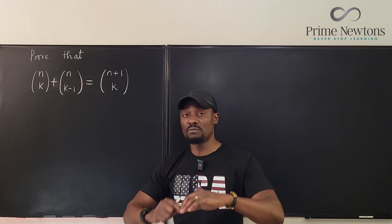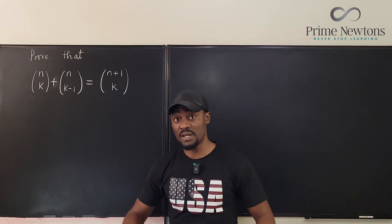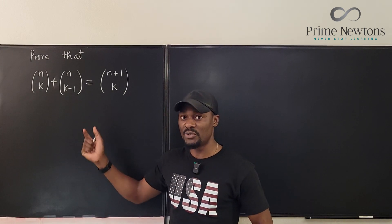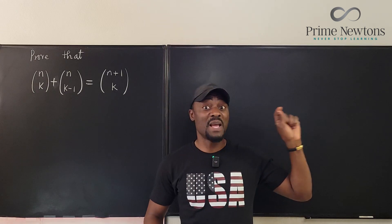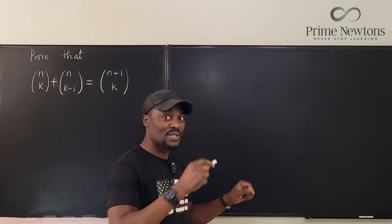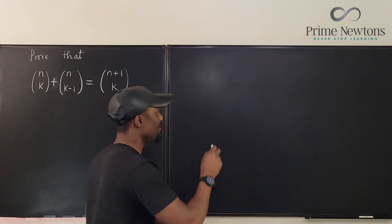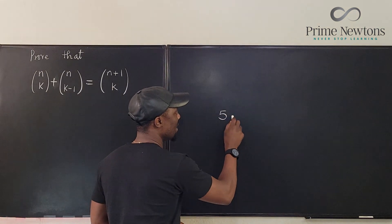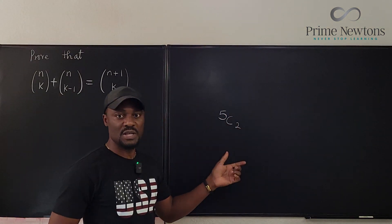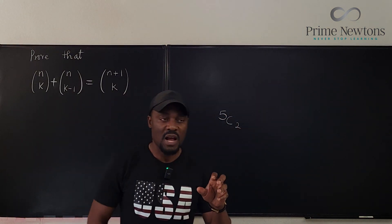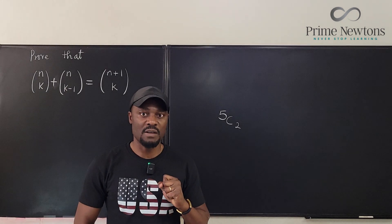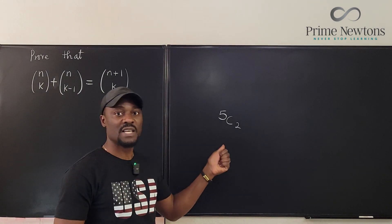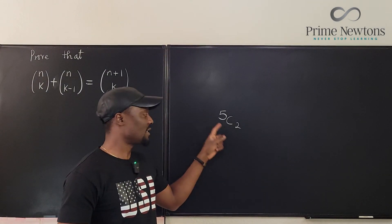For those of you who are not familiar with combinatorics, or at least don't understand this notation — I remember when I learned it many years ago we used to use the symbol C — let me give you an example. Say I want to compute 5 combination 2. What does this mean? It means I want to choose 2 out of 5. So if I have 5 objects and I want to choose any 2, how many ways can I do that? That's how you write it.